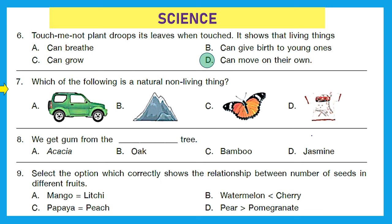Question 7: which of the following is a natural non-living thing? Option A — the car or jeep — is not natural; it's man-made. Option B — mountain — is natural and also non-living, so we got our answer: option B is right. Option C is a living thing, and option D is man-made. So only option B is the right answer.